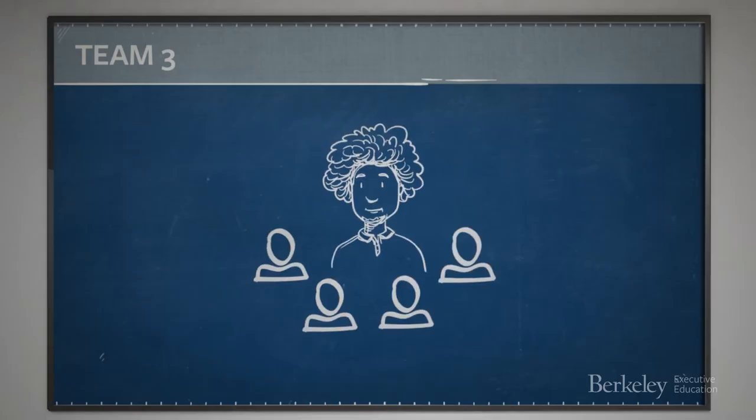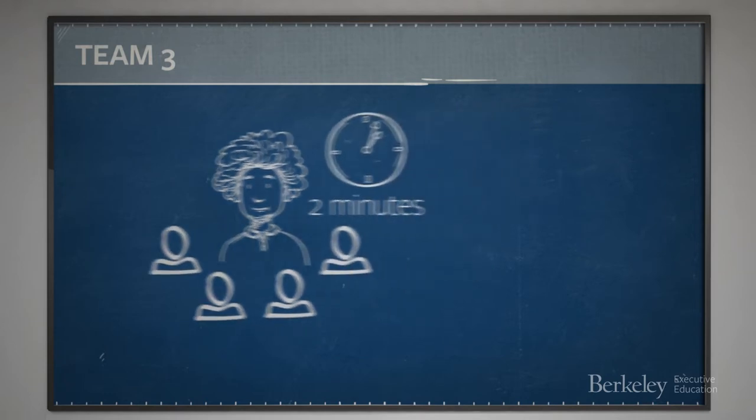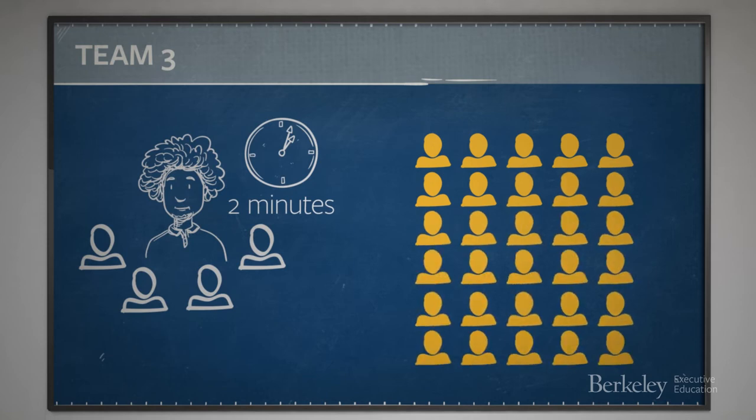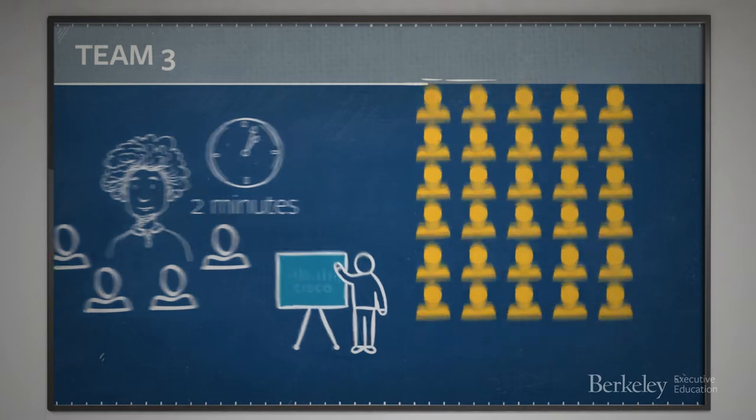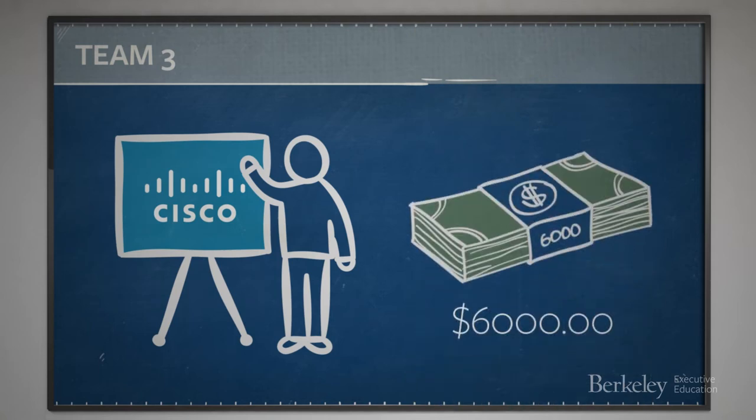A third team thought about the problem for a bit and decided that the two-minute time slot they had to present to the class might provide a focused opportunity for a company to market itself to the 90 bright young students in the class. And they sold their time slot to Cisco for six thousand dollars in advertising time. They reframed the problem to be solved in a different way, ignoring the boundary conditions set by the five dollars and two hours, and instead looking at the opportunity they had been presented.